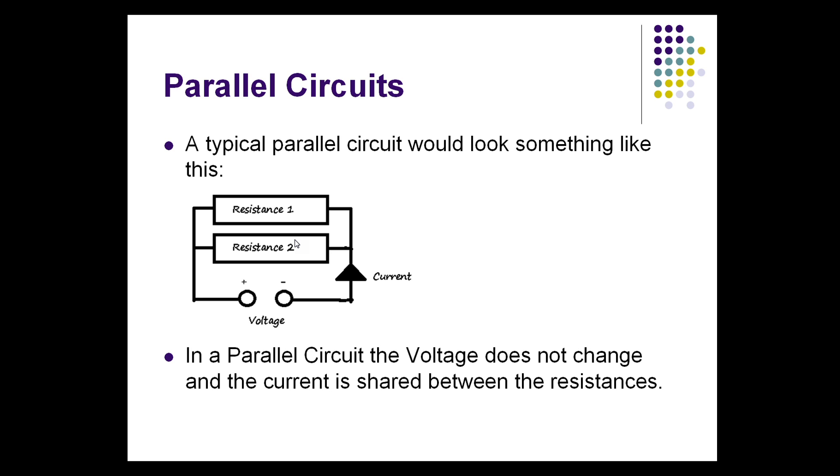So that you can, instead of having to say the top resistor, the resistor at the top of the circuit, the resistor at the bottom, you can just refer to it simply as resistance one, resistance two. The voltage does not change. So at all points through this circuit, the voltage will stay the same.